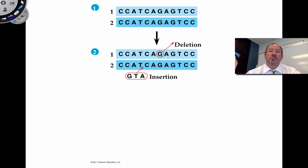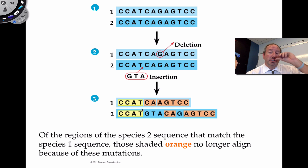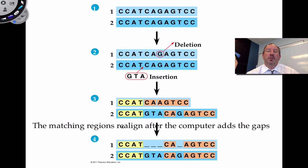You could have a deletion mutation where a whole base is removed, or you can have an insertion of a particular codon. As a result, when you put the sequences side by side, the areas shaded in orange no longer align between species one and two because of those mutations. But if you put this into the computer and allow it to fill in the gaps, you can start to see that these sequences are actually closely aligned with one another, revealing the two mutations — the result of this insertion and this deletion.